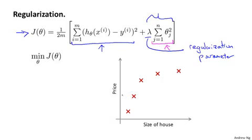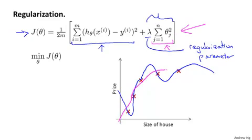For our housing price prediction example, whereas previously if we had fit a very high order polynomial, we may have wound up with a very wiggly or curvy function. If you still fit a high order polynomial with all the polynomial features, but instead you just make sure to use this regularized objective, then what you can get out is a curve that isn't quite a quadratic function but is much smoother and simpler, and maybe a curve that gives a much better hypothesis for this data. I realize it can be difficult to see why shrinking the parameters can have this effect, but if you implement this algorithm yourself with regularization, you will be able to see this effect firsthand.